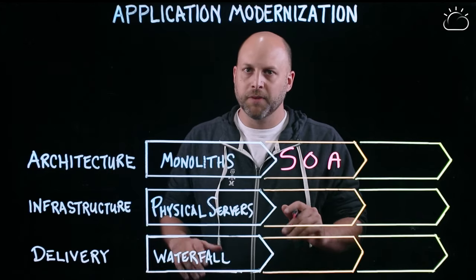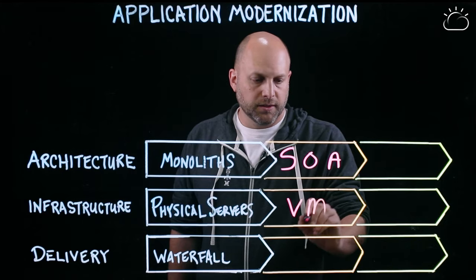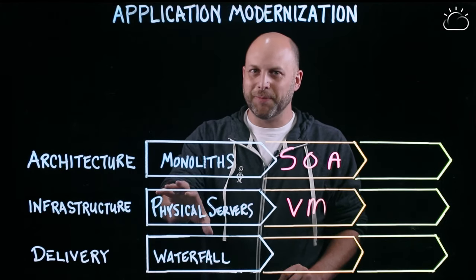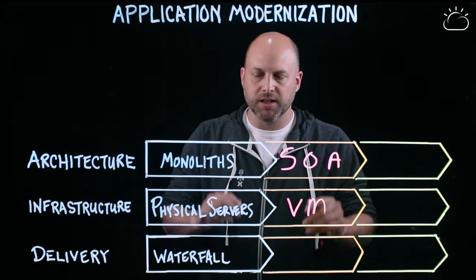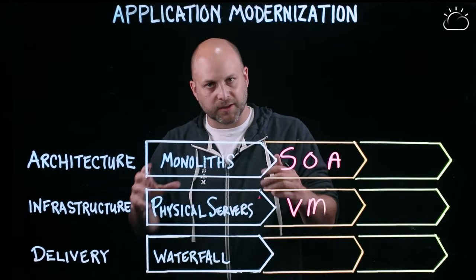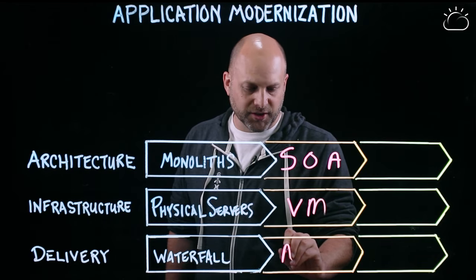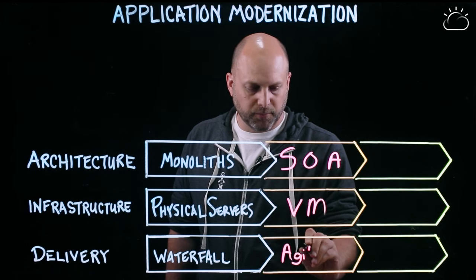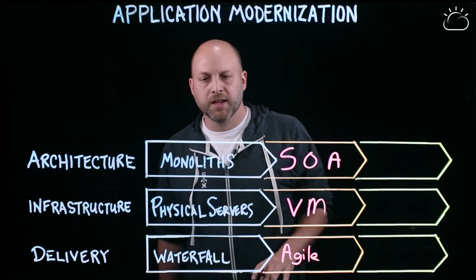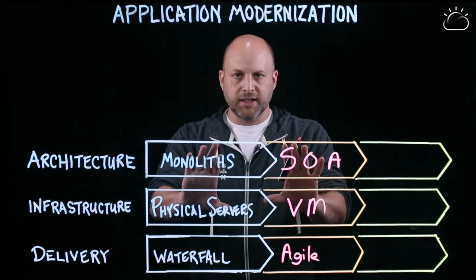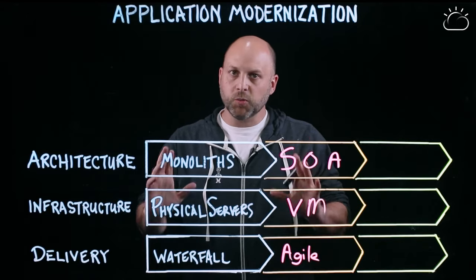On an infrastructure level, they're running on some sort of virtual machine. We said we could probably do better than having to order a new server every time we have a new service — let's virtualize this stuff and get a little more density along the way. And from a way of working, agile development is pretty normal, then trying to figure out what happens downstream.